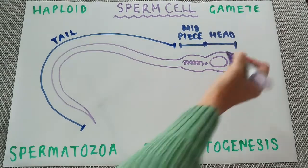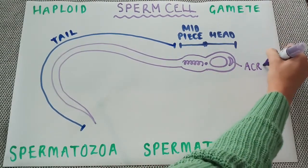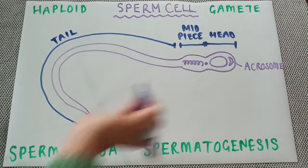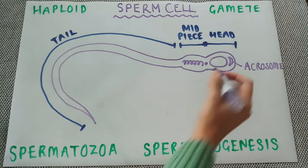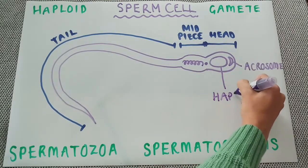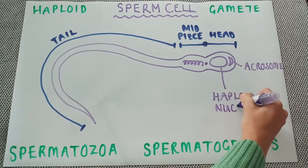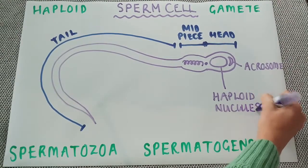Within the head we have the part right at the front called the acrosome. That is there containing enzymes which help the sperm to break down the outside layers of the egg. There is also the haploid nucleus, which contains those 23 chromosomes coming from the dad.